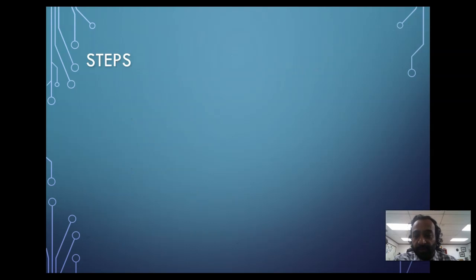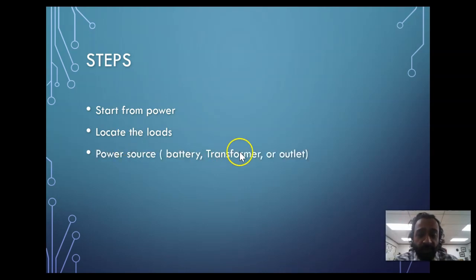Steps: start from the power, look at the loads. Loads are the resistance, capacitors, transformers, relays—those components that actually use power to do something, either open or close circuits or do control or change the power. Power source could be a battery, transformer, or an outlet. There are three components for every electrical circuit: source, path, and load. If there's no path, there's no circuit. If there's no load, there's no point. Turns and switches—we have switches, turns, and logic. We'll spend the whole week talking about capacitors, relays, and contactors.